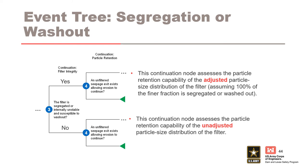Event tree for segregation or washout. This slide illustrates how the generic event tree can be adapted if the filter is susceptible to segregation or is internally unstable. A node was added to assess the likelihood of the filter being segregated or internally unstable. Given the filter is susceptible to segregation or internal instability, the next node assesses the likelihood of continuation based on the adjusted gradation. Given the filter is not susceptible, the complementary next node assesses the likelihood of continuation for the stable filter and its unadjusted gradation.